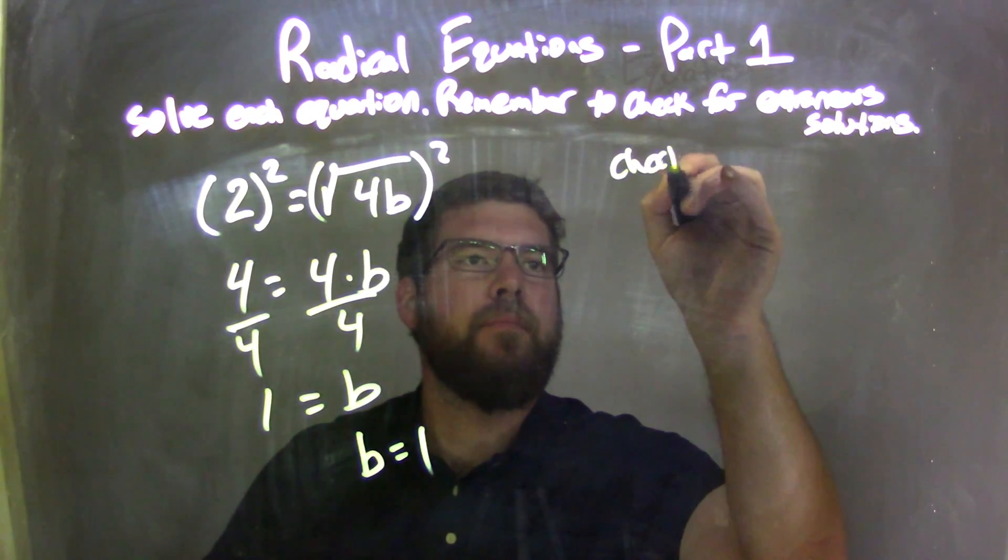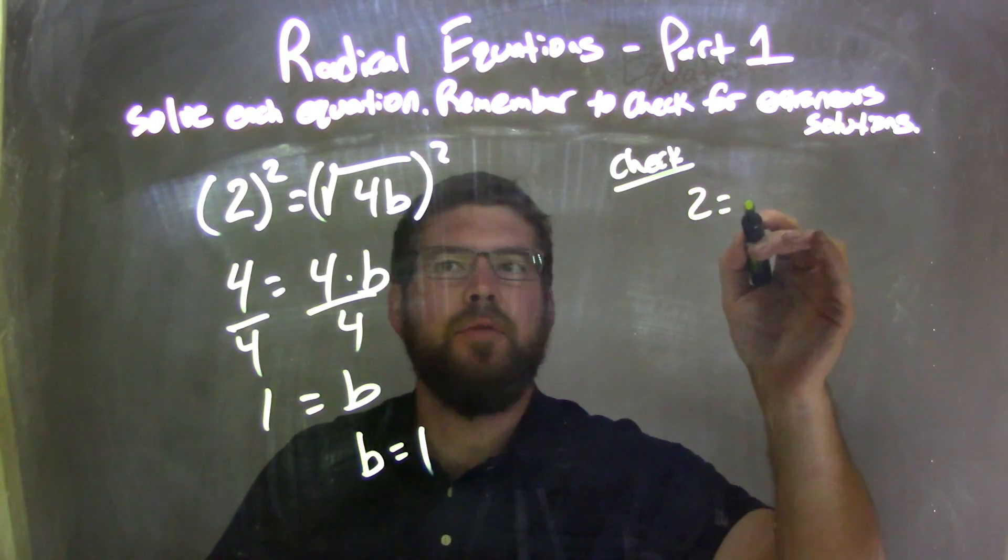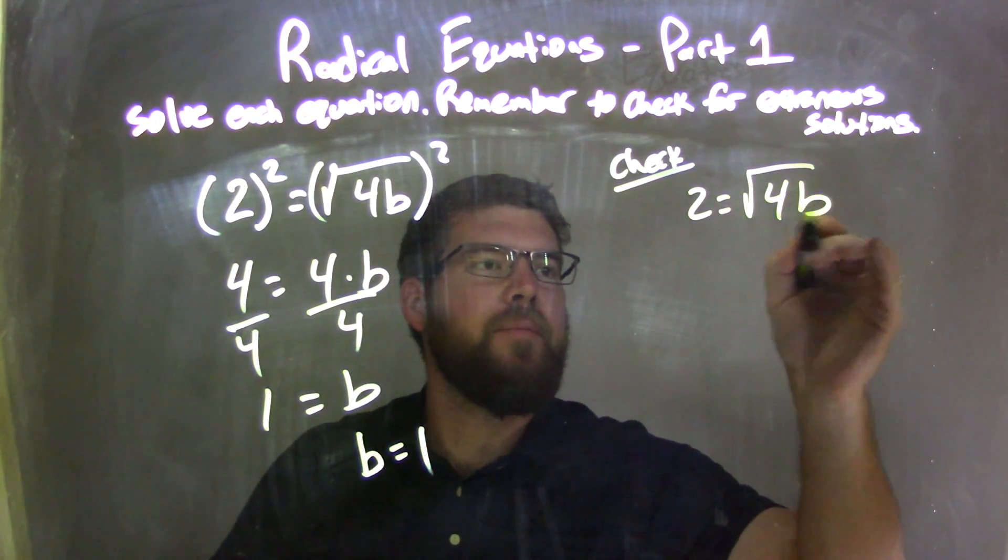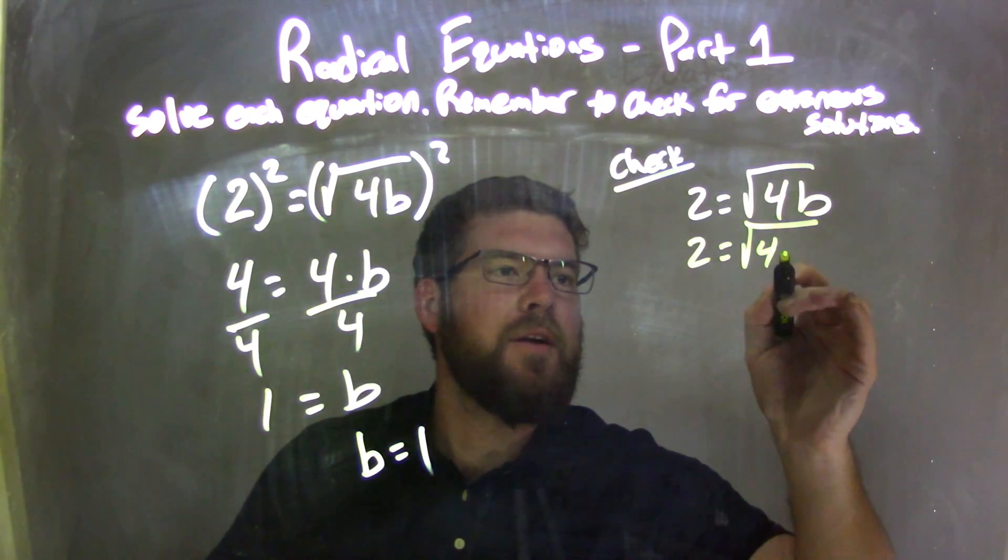But now I need to check. In doing so, I write my original equation, 2 equals the square root of 4 times b, and then I'm going to plug this 1 in for b, so we have 2 equals the square root of 4 times 1.